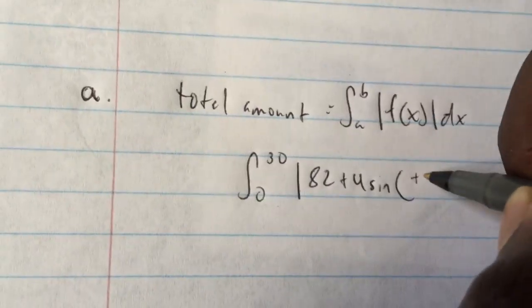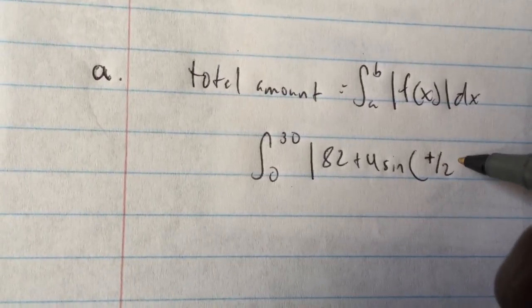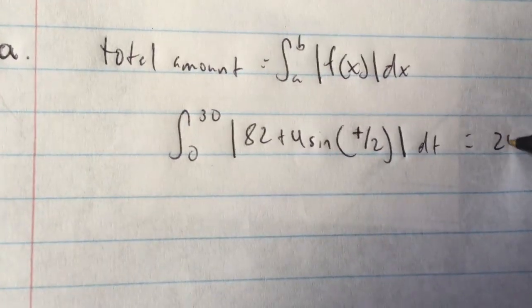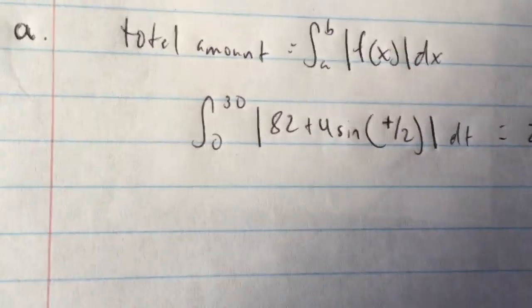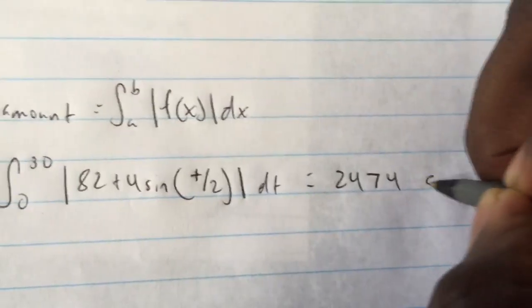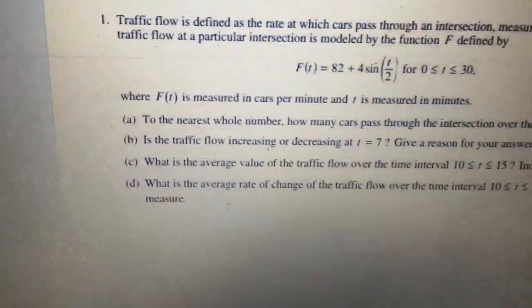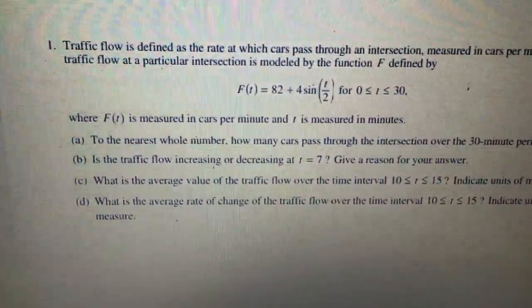For this question, the integral would be from 0 to 30 of the absolute value of 82 plus 4 sine(t/2) dt. When you plug that into your calculator, you would get 2,474 cars.